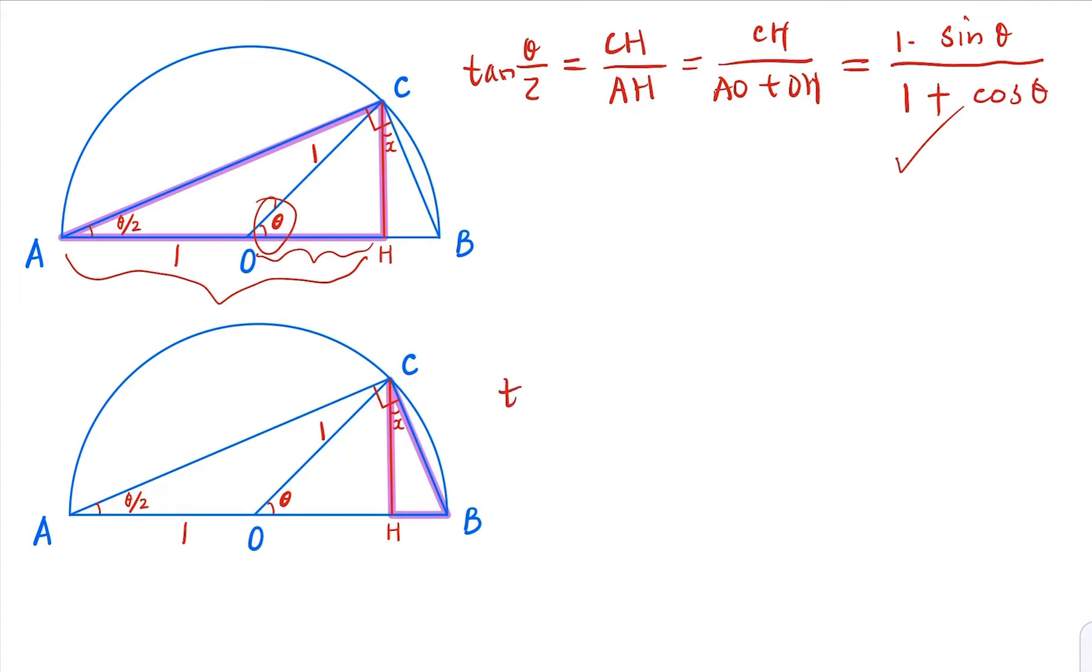Now here we need to show that the angle X is equal to the angle theta over 2. Why? Because both angles add up to 90 degrees. So because X plus this angle B equal 90 degrees, and half theta plus B equal 90 degrees.